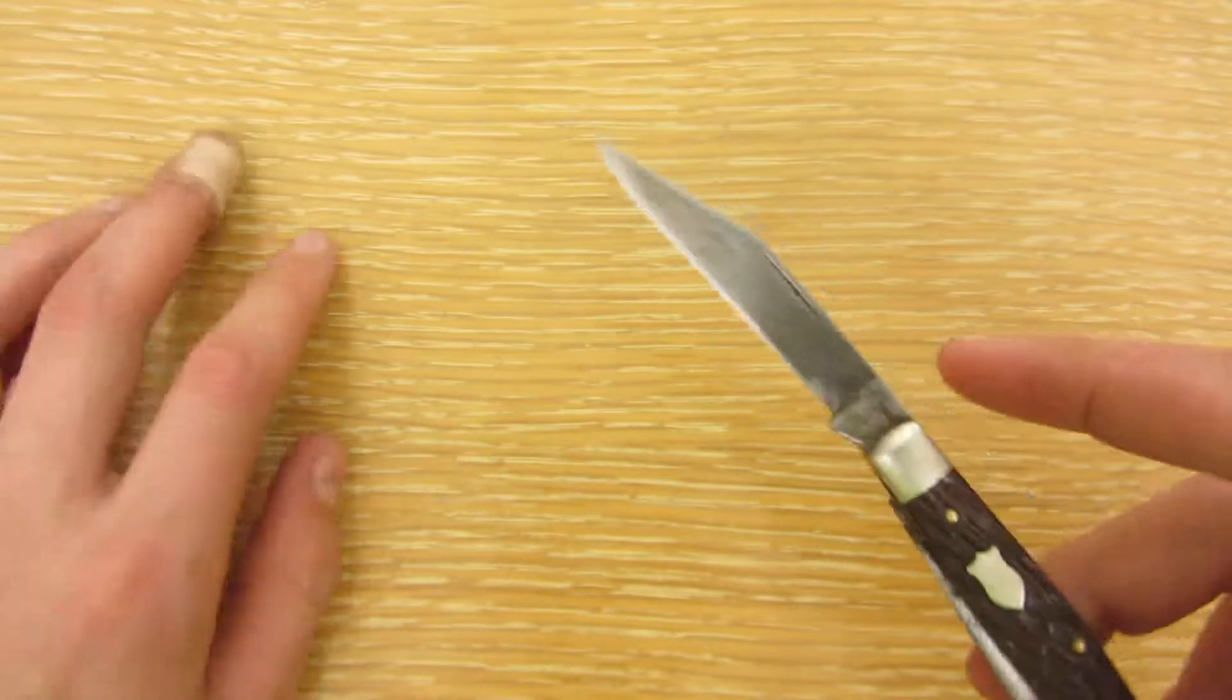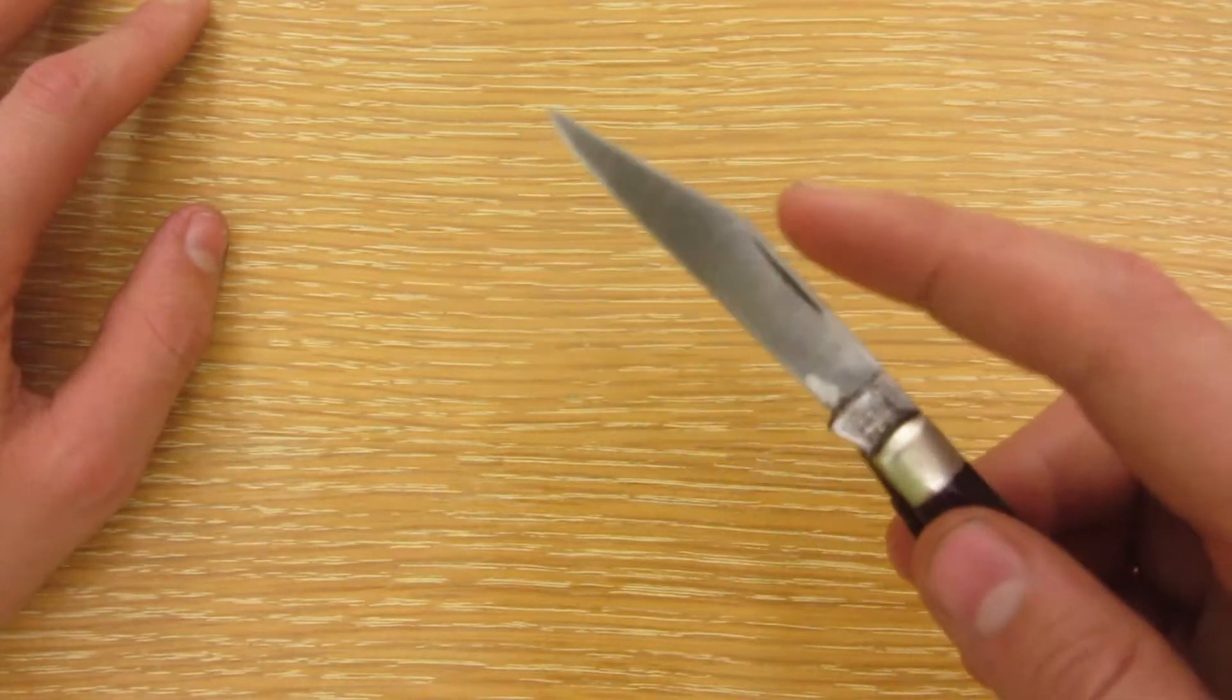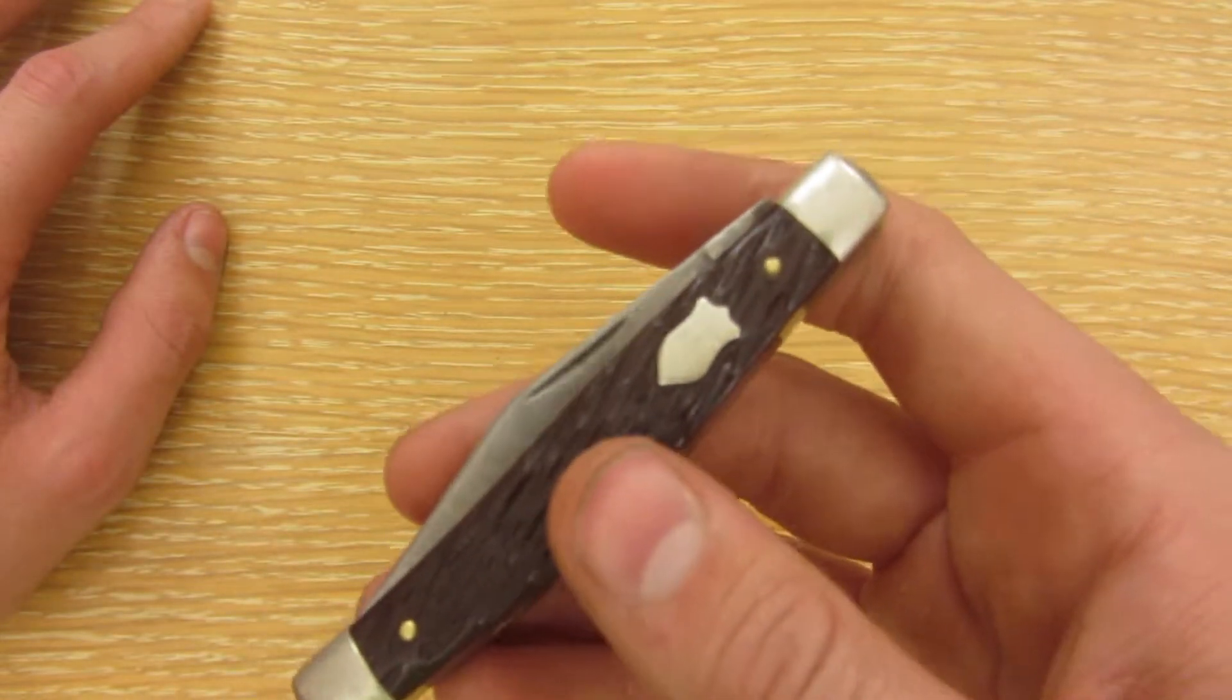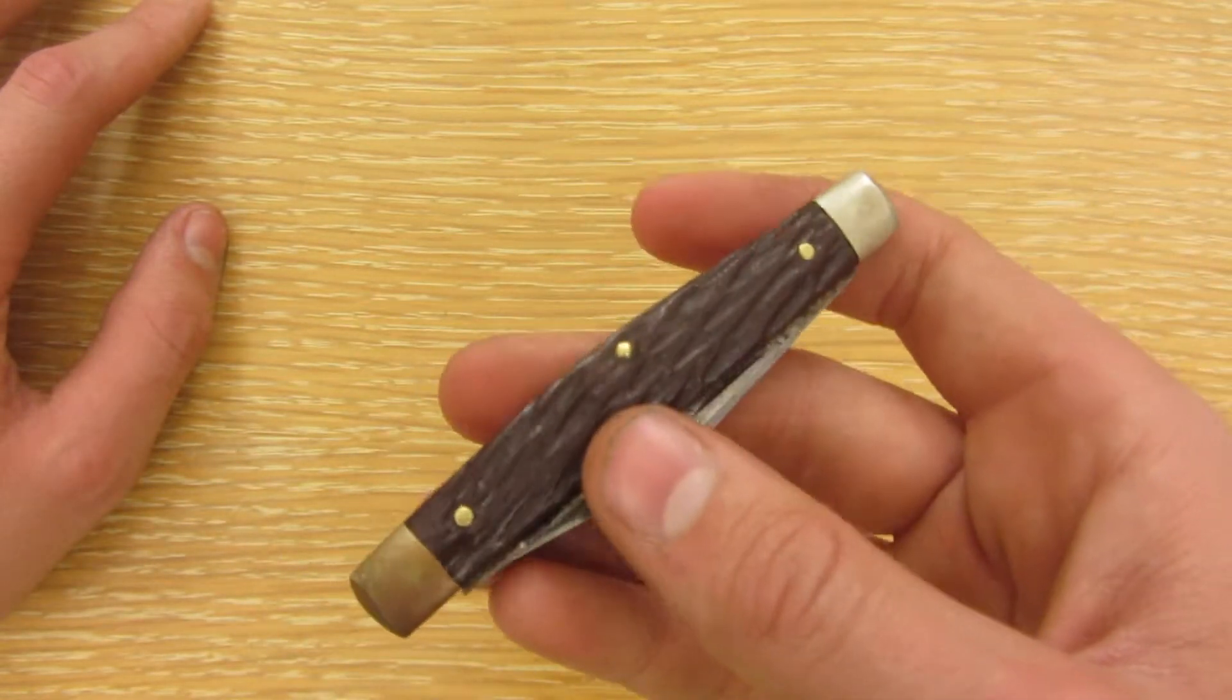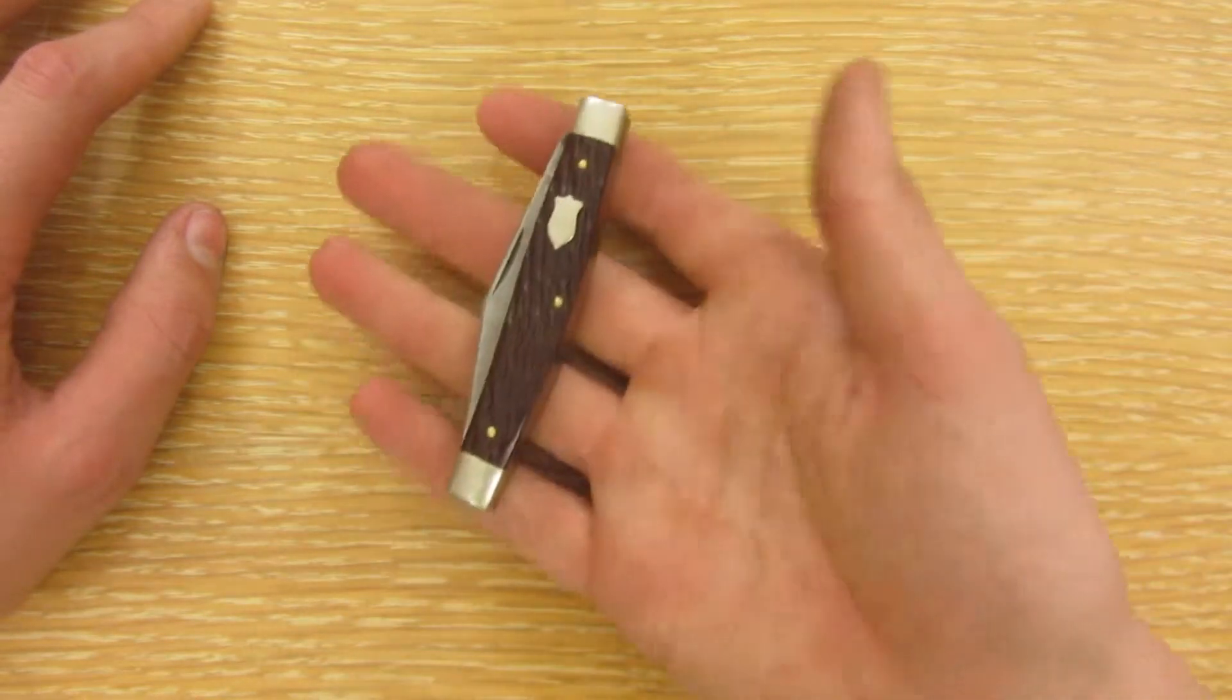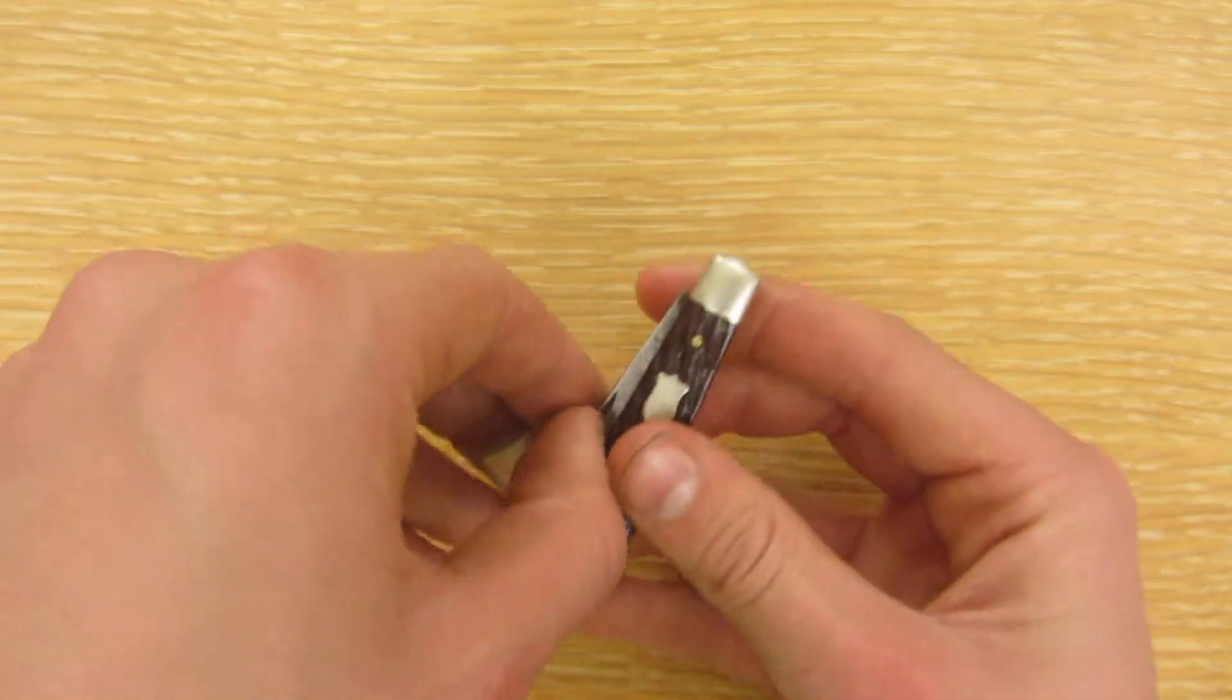So the main knife, obviously, is this one. It's the nicest. But yeah, I thought it was a really cool knife. It's got the bone handles. And it's relatively small, but big at the same time.